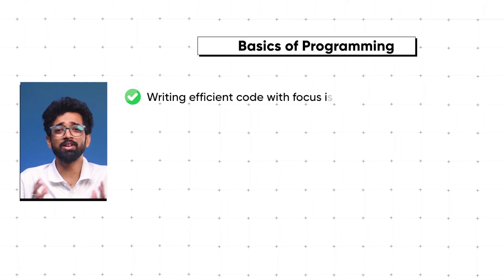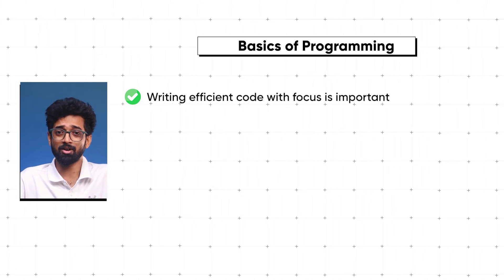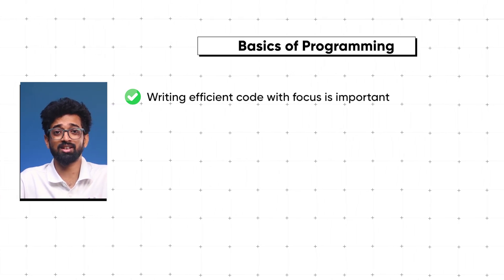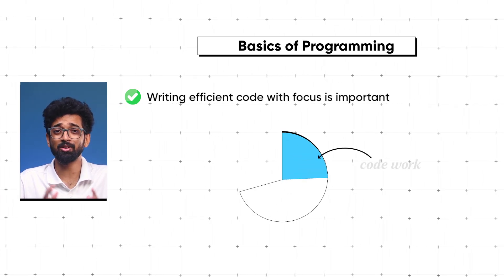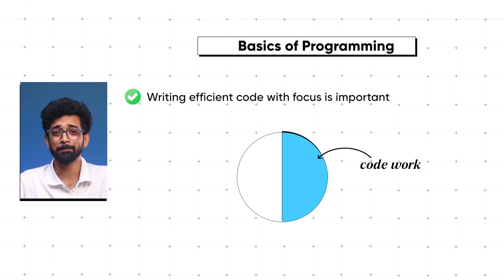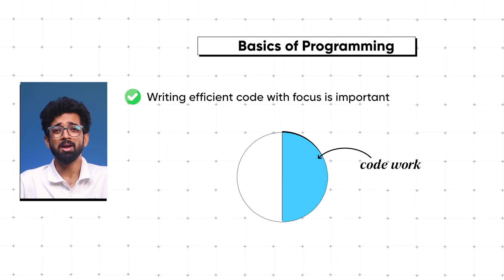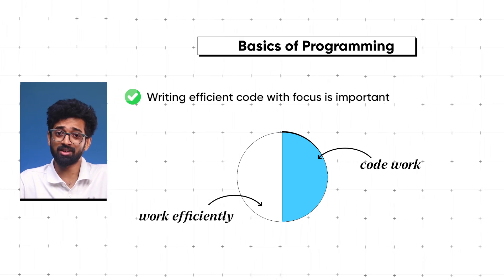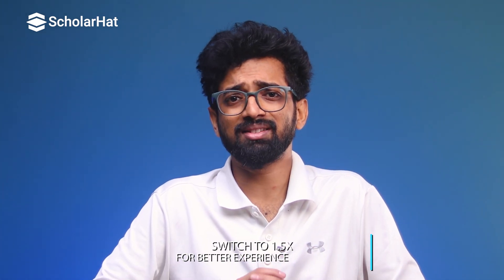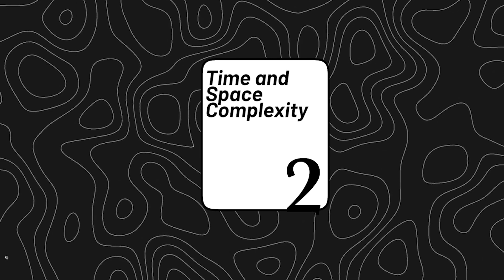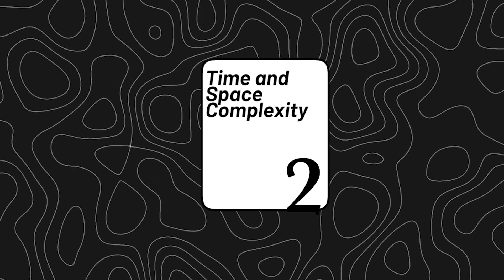Writing efficient code with focus is important — it's not just about making your code work, it's about making it work efficiently. And in DSA, efficiency is key. Now that you know the basics, it's time to understand time and space complexity.